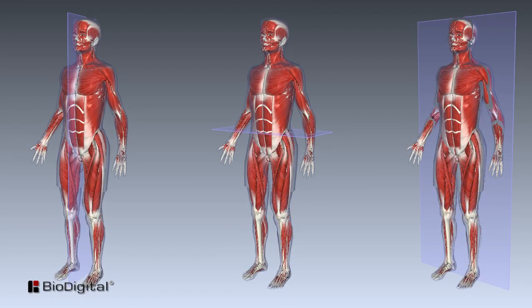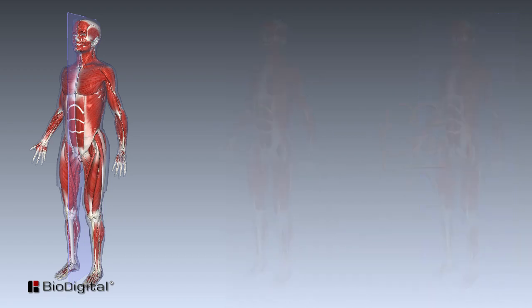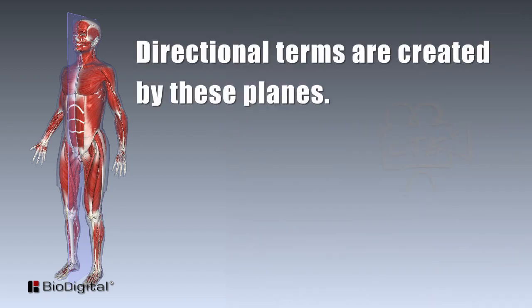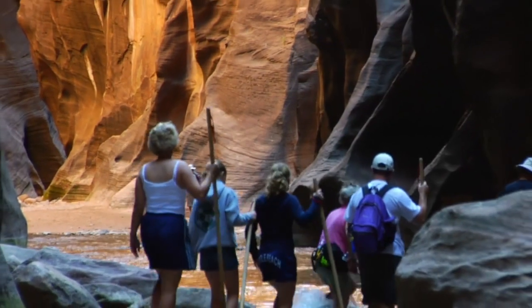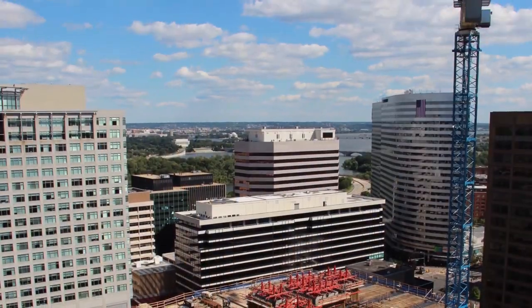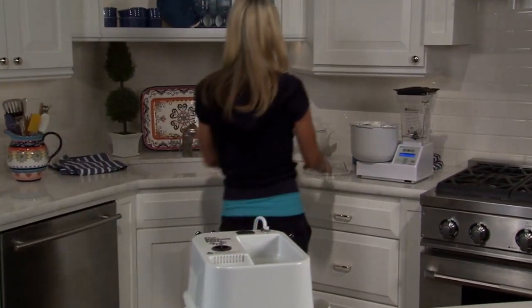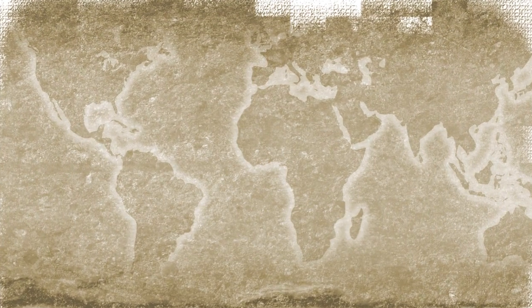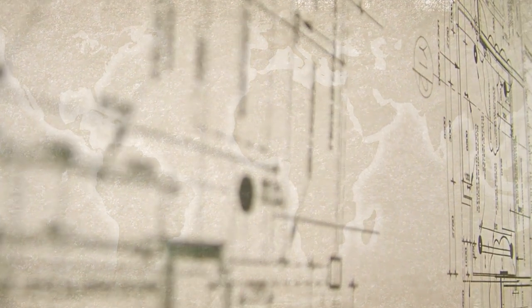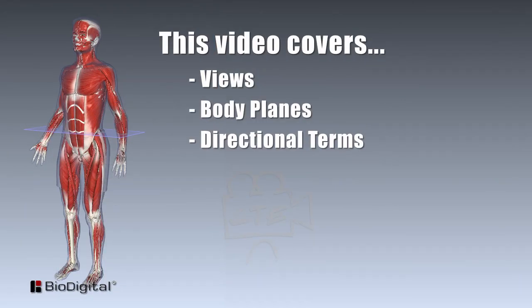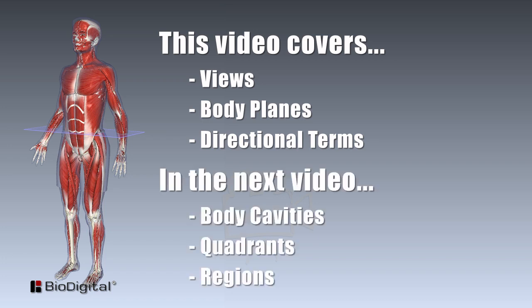Body planes are imaginary lines drawn through the body at various points to separate the body into sections. Directional terms are created by these planes. Just like constructing a building or road, or putting together a toy or an appliance, you need a map or a set of blueprints or instructions to get the job done right. Views, planes, and directional terms will be the first of two videos in this mapping the body series. In the next video, we will cover the body cavities, quadrants, and regions.